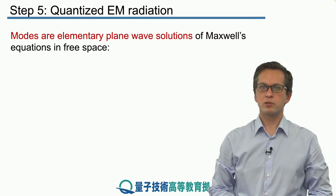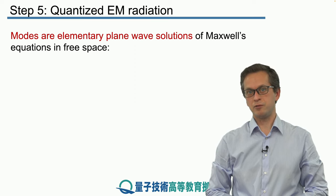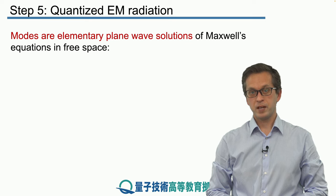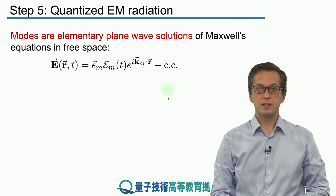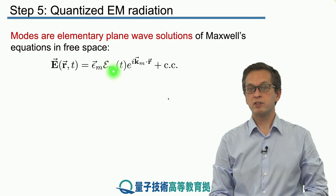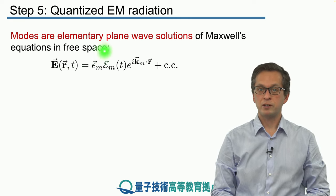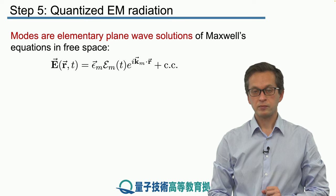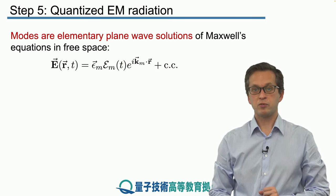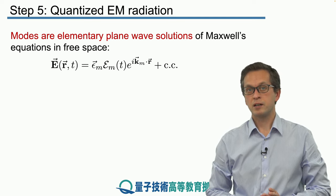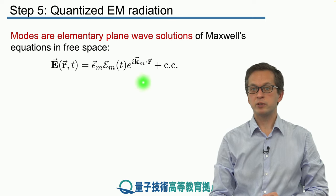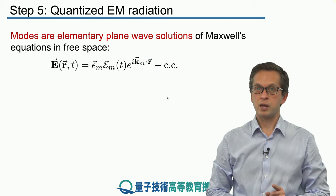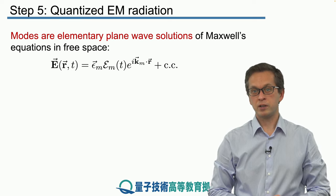Let's remind ourselves of the known results from previous lessons on classical electromagnetic radiation. We know that the mode is an elementary plane wave solution of Maxwell's equations in free space. The electric field at some position r and time t is given by: E(r,t) = ε̂_m ℰ_m(t) e^(i k_m · r) + c.c., where m labels the mode and ε labels the polarization. ℰ_m(t) is our complex electric field amplitude, and the exponential gives the inner product between the wave vector k_m and position vector r.